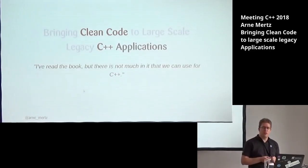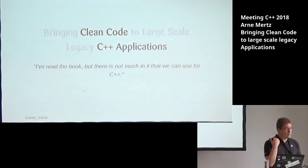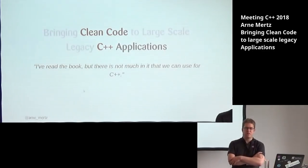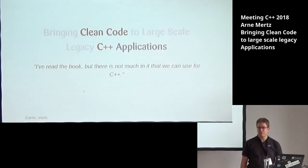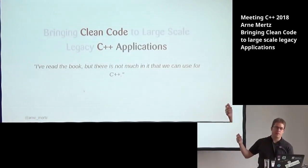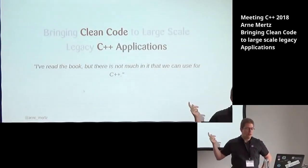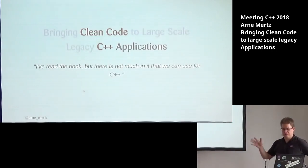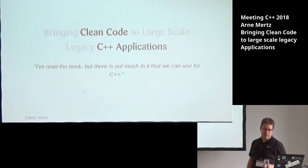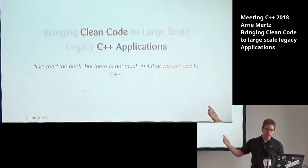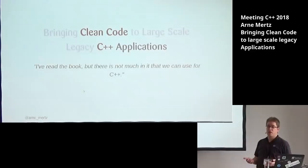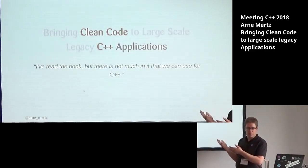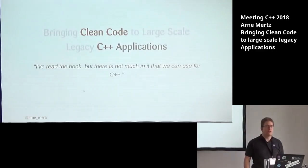A common answer I've gotten is: they've read the clean code book, but there's not much in it they can use for C++ because it's all OOP, it's all Java. Well, if you have OOP C++, we can still use the OOP techniques. And there's a lot of other stuff that's not about object-oriented programming that we can still apply to C++. This is just a lame excuse to not actually try it. For example, we can write short functions, meaningful names, and good tests — this has nothing to do with object-oriented programming or Java. It's all language-agnostic.